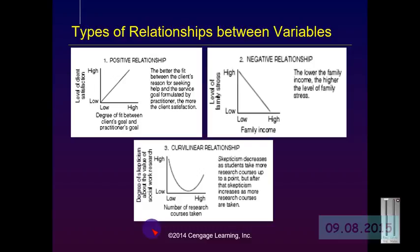Box number three is a curvilinear relationship. Skepticism decreases as students take more research courses, but only up to a point — after that, skepticism begins to increase again. A better example is drinking red wine. There was a lot of media attention to research indicating that drinking red wine was good for your heart, and that is a perfect example of a curvilinear relationship. As drinking red wine went up from zero to two or three drinks a day, the level of heart disease decreased. However, if you went beyond two or three drinks a day, you would find that heart disease starts to go up again.